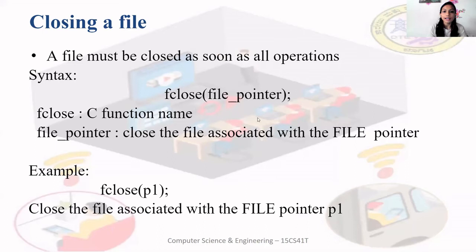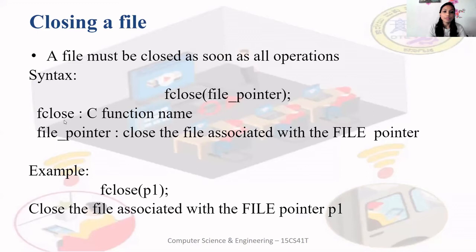The syntax of fclose is: fclose followed by the name of the file pointer inside parentheses. Your file pointer might be fp, p1, p2, p3, and so on. fclose is a C function that will close the file. The file pointer specifies which file associated with that pointer should be closed.